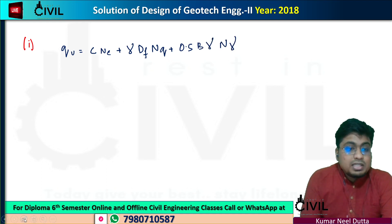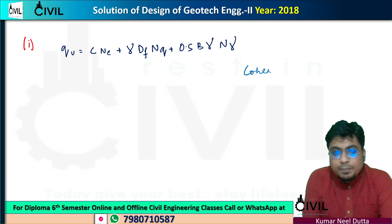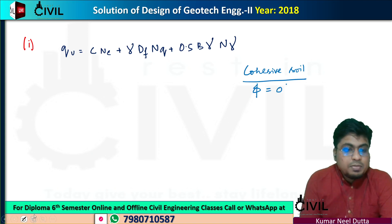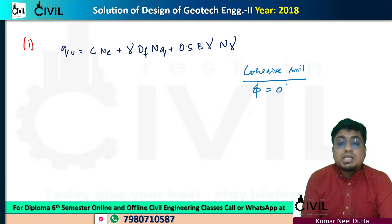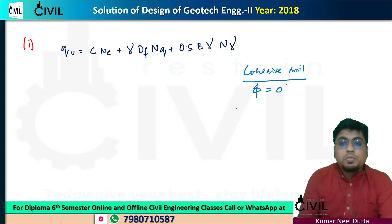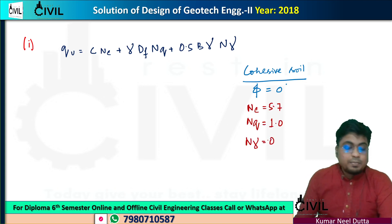Now, what do we say about our soil? It is cohesive soil. If there is a cohesive soil, the phi value is 0. The bearing capacity factors Nc, Nq, and Nγ depend on the angle of internal friction (phi). If phi equals 0, then Nc = 5.7, Nq = 1, and Nγ = 0.